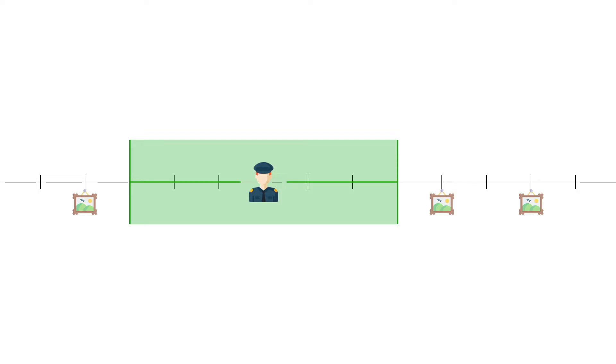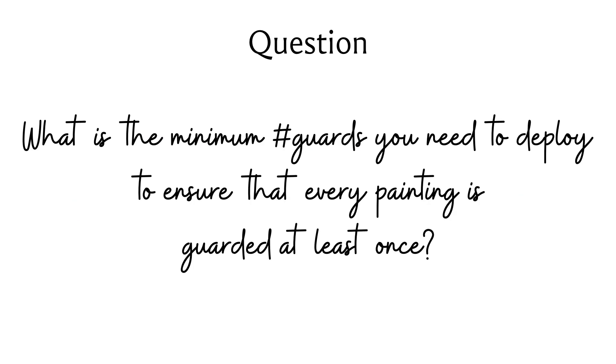This visibility range is given as input, which we call k. All guards have the same visibility range - any guard placed at position x will observe position x and any position within k units to the left or right. With this setting, let's define the optimization objective.